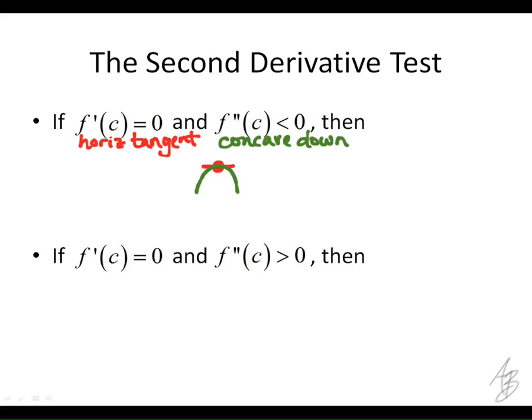Exactly. So that means F of C is a local maximum — it has to be local because we don't know anything about what's going on with the rest of the function; we just know what's going on at this point. This is an alternative to the first derivative test. The first derivative test would tell us that the function goes from increasing to decreasing at this point. With the second derivative test, all we have to do is plug the C value into the second derivative, and that tells us whether it's concave up or concave down. If it's concave down at a horizontal tangent, that means it has to be a maximum.